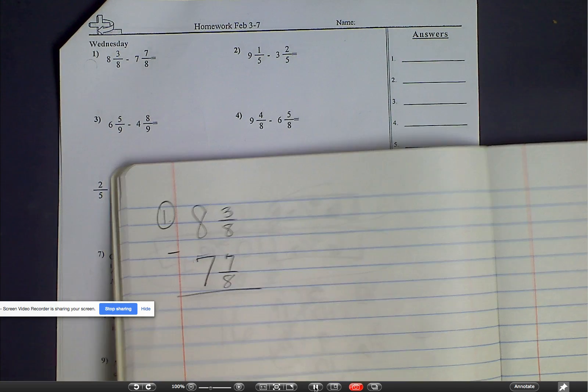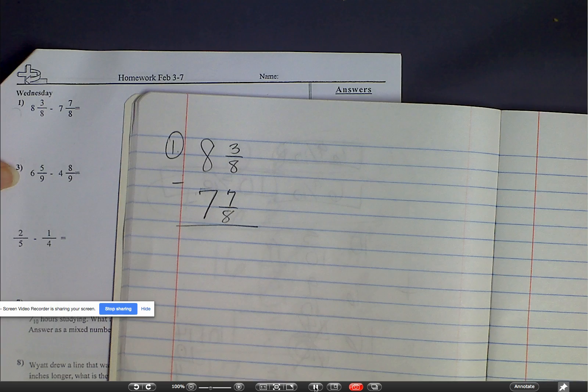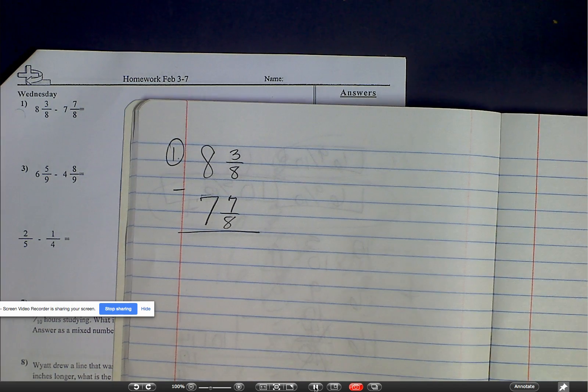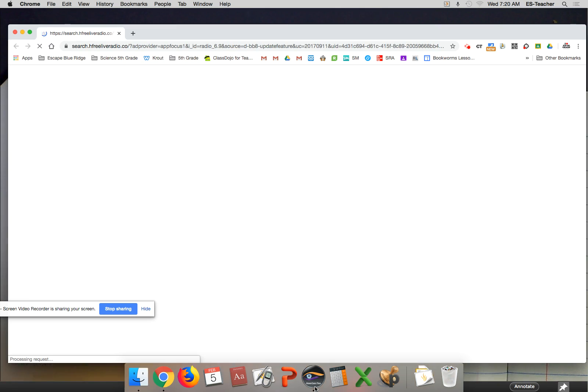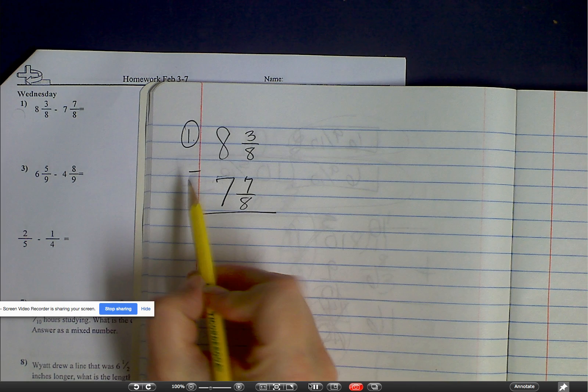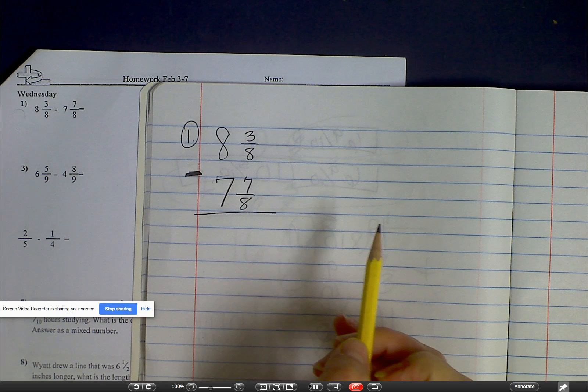So the way we're going to do this, I'm going to bring this over here. The first thing you need to do is look to see if they have a common denominator. And since they do, we can go ahead with our operation, which is subtract.